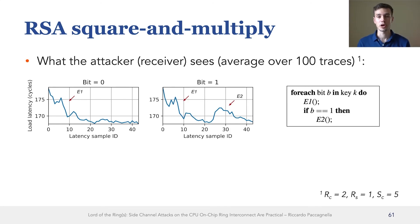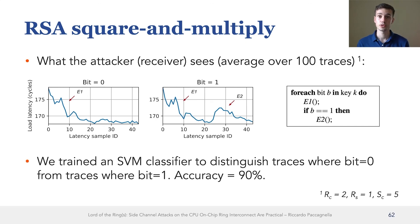The right hand side of these plots are when E2 is executed or E1 is executed again. And as you can see, when the bit is equal to one, then there is a distinguishable peak of ring contention. This peak is so distinguishable that when we trained an SVM classifier to use single traces to infer the bit, we achieved an accuracy that was 90%. And in the paper, we show the same attack also against ECDSA.